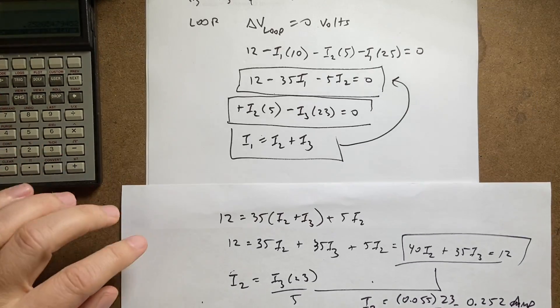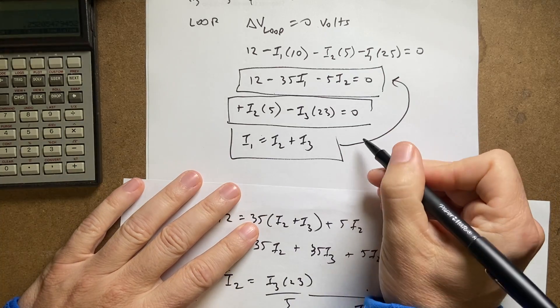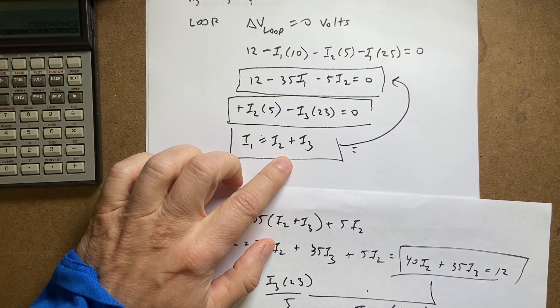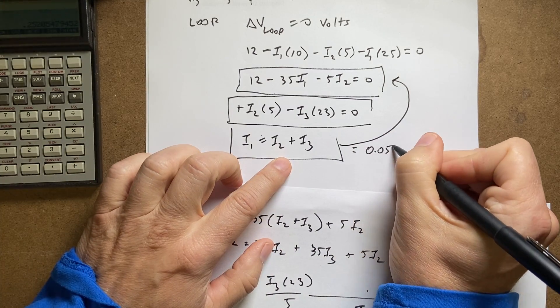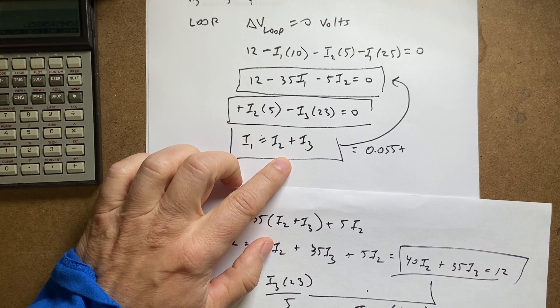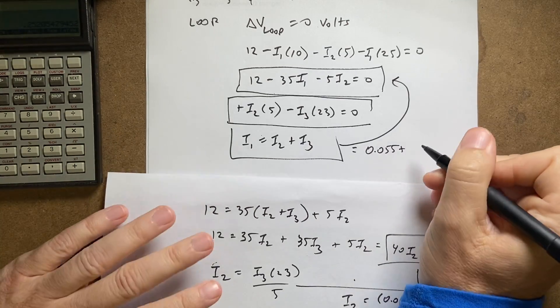And then I can go finally all the way back up here and find i1. That's just going to be the sum of these two, so it's going to be 0.055 plus 0.252.